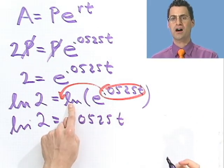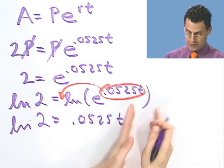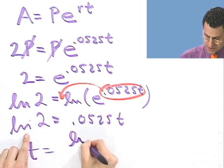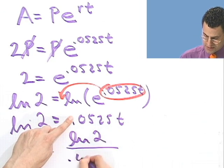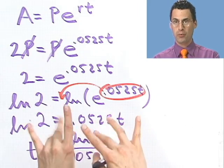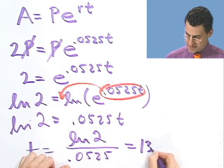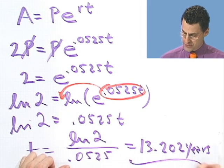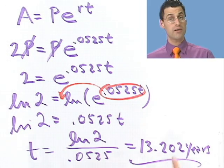Natural log of e, that's log base e of e, is 1. So it goes away. And now I can solve for t. t must just equal the natural log of 2. And then I divide by .0525. And what's that? Well, you plug it into a calculator, and it produces 13.202 years. So just over 13 years. And you should double your money, no matter how much you put in.